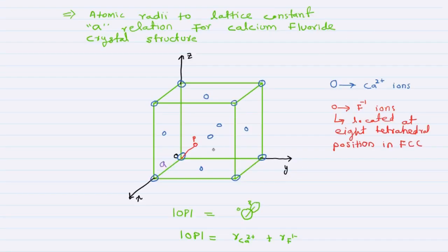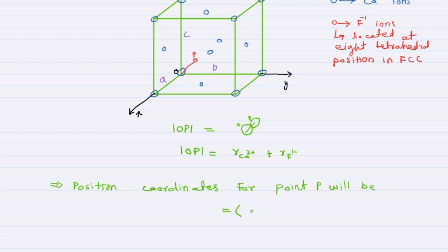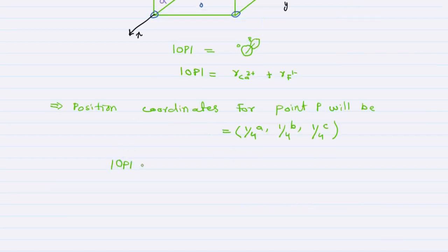If these are the lattice constants A, B, and C, then the position coordinates for point P will be (1/4)A, (1/4)B, and (1/4)C. This is by definition of the tetrahedral positions.